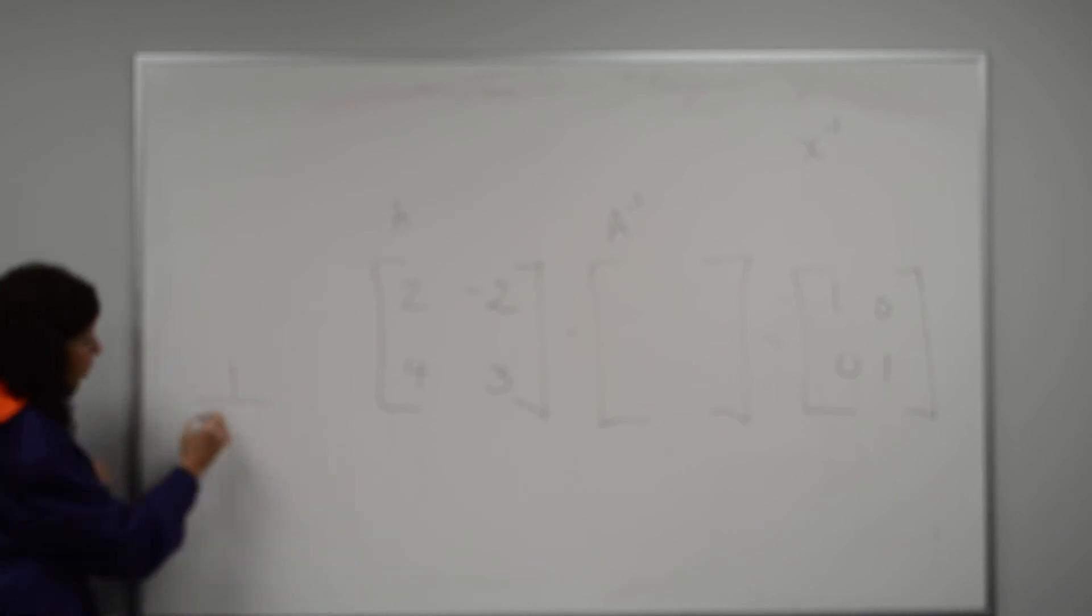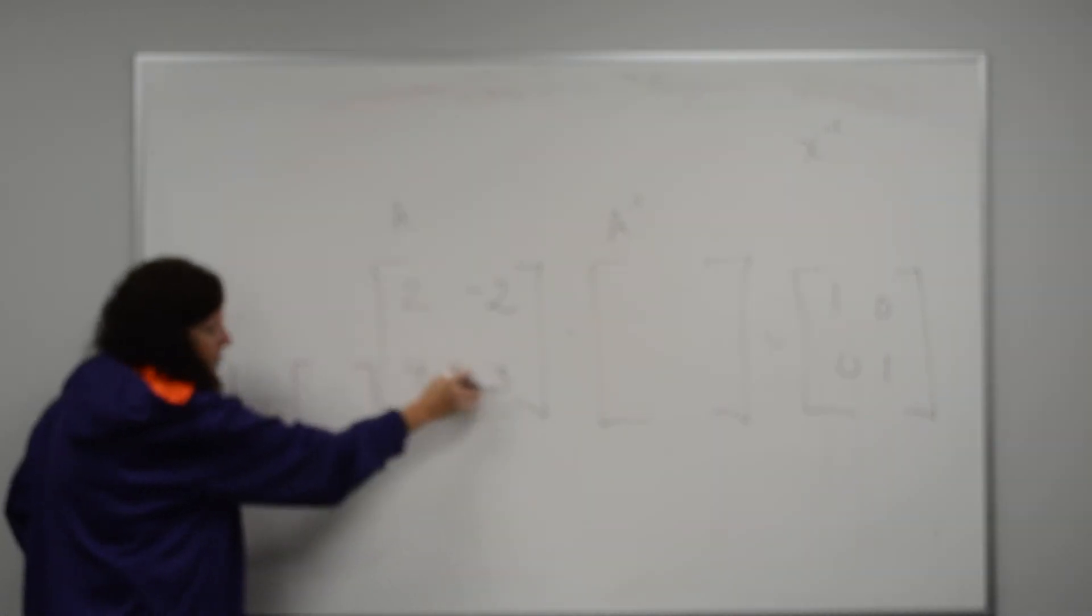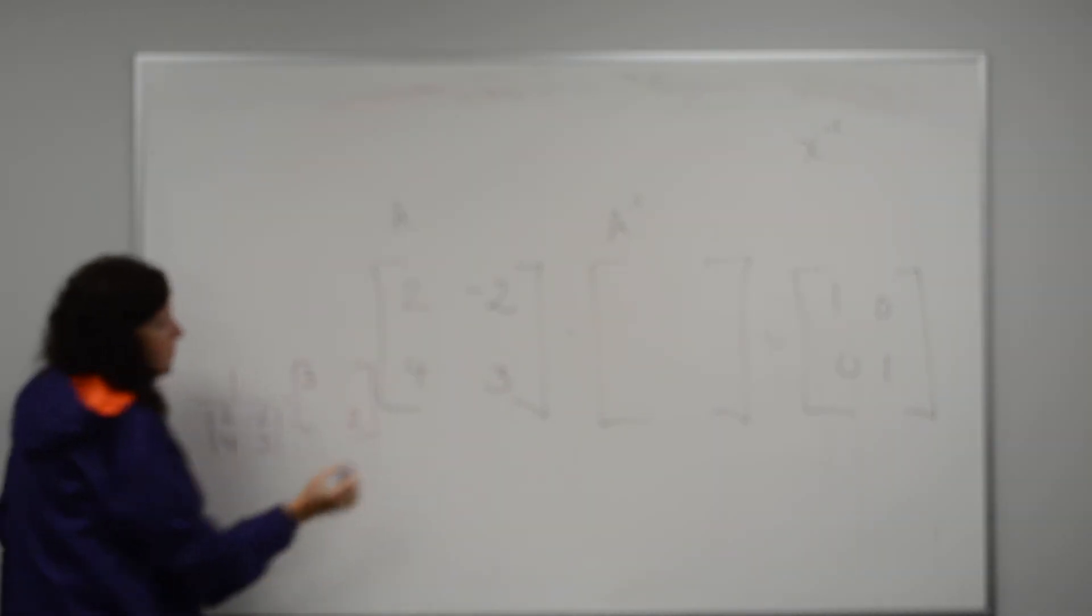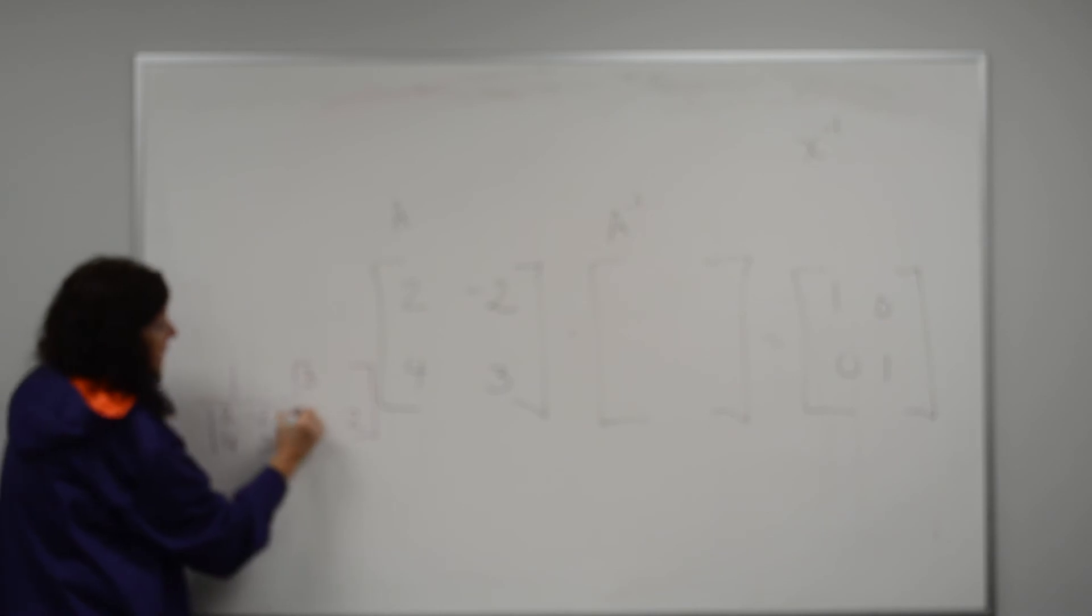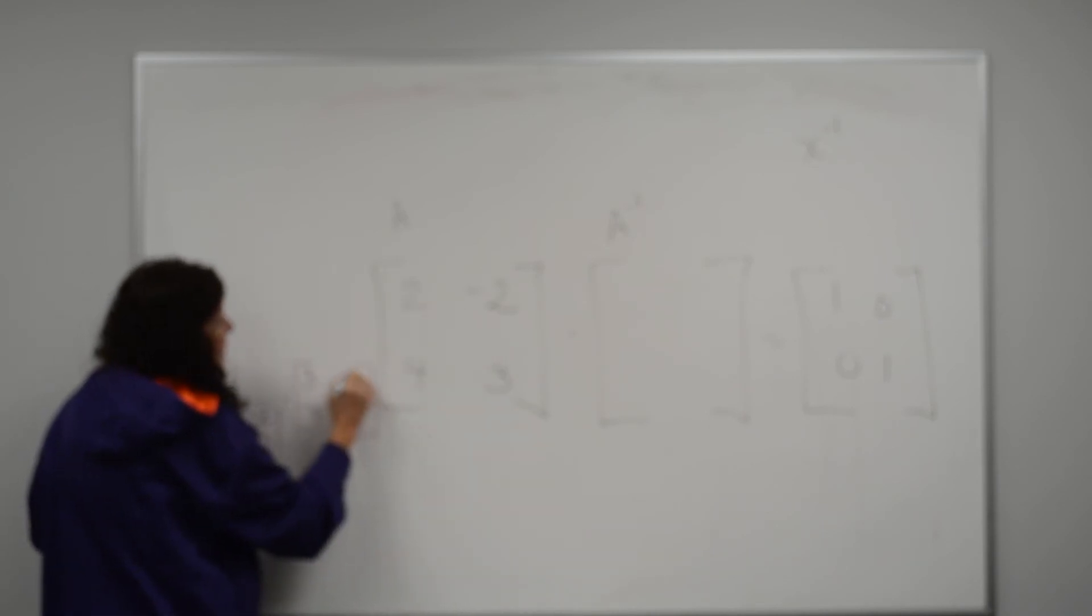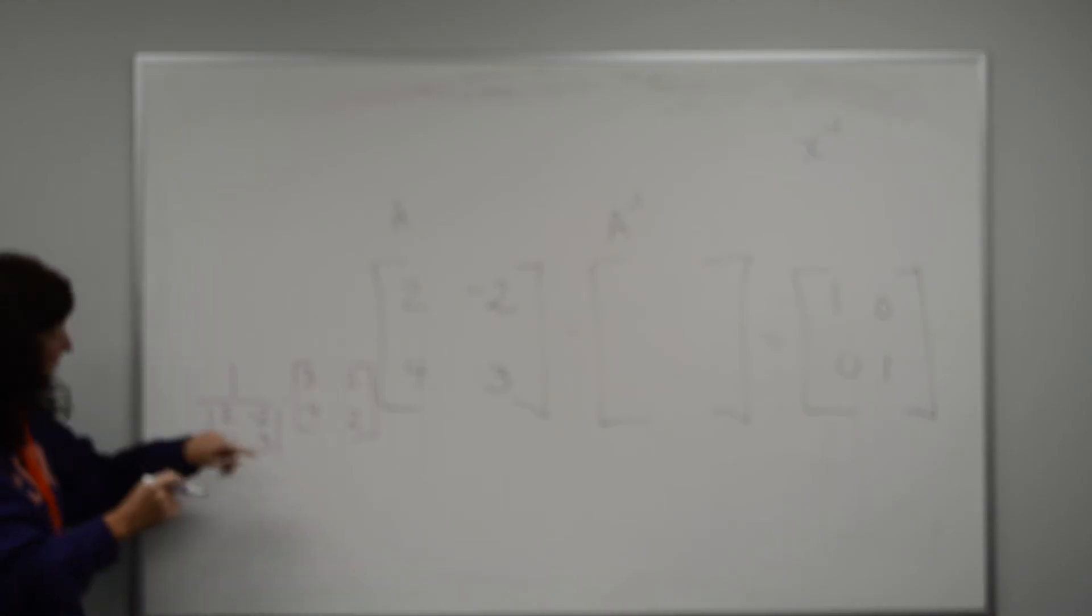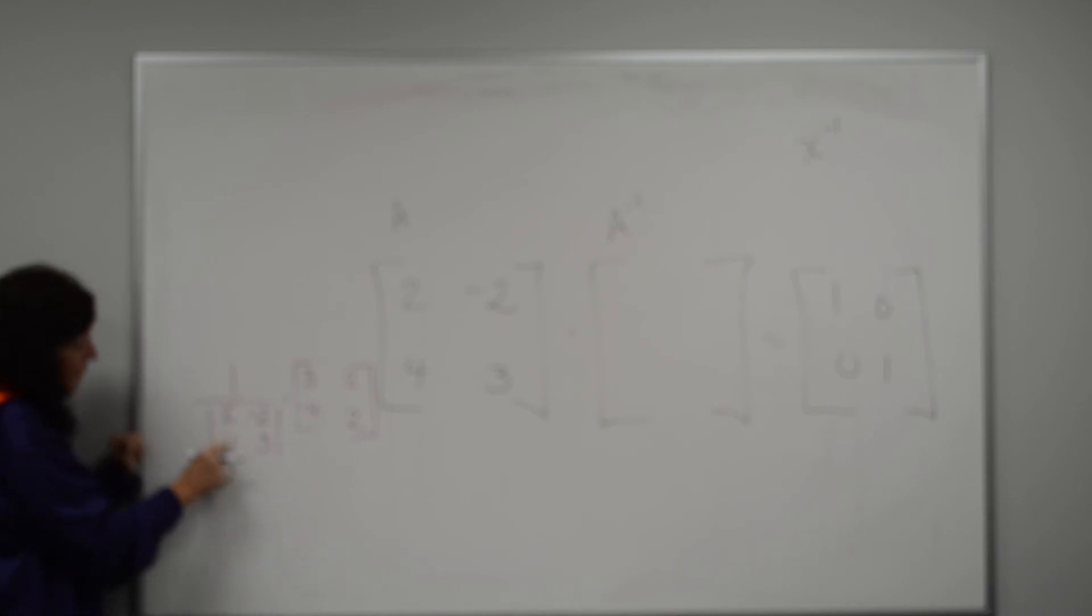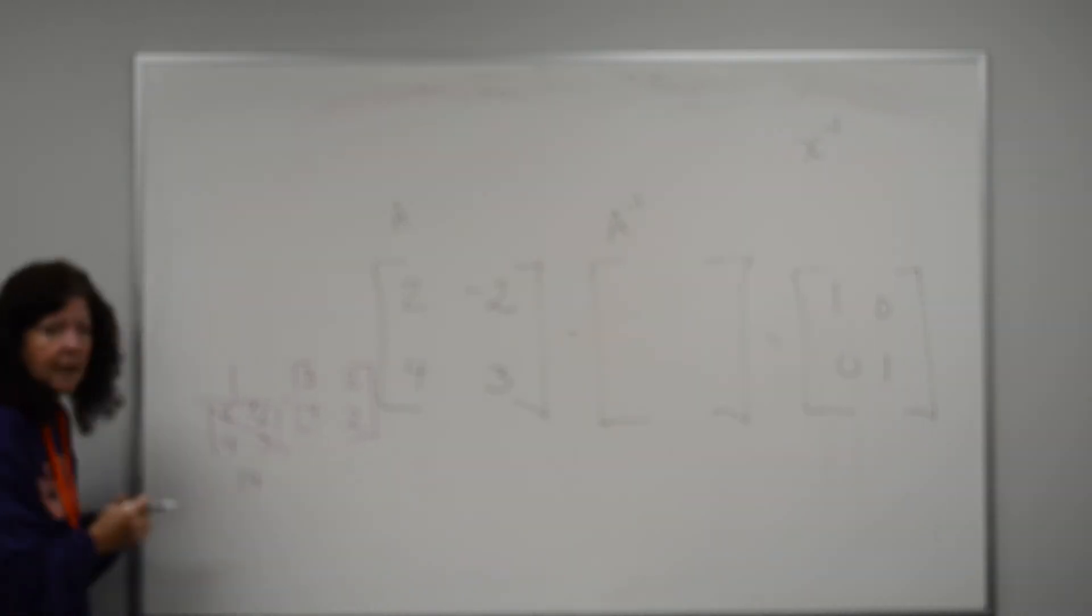Here's my matrix. I want to find the inverse of this matrix. To find the inverse of a 2 by 2, I go 1 over the determinant of this matrix times, watch, I'm going to switch these two. So 3 and 2, they just switch places. Then I'm going to take the opposite of these two. That positive 4 becomes a negative 4. That negative 2 becomes a positive 2. Then when I find the determinant, 2 times 3 is 6, 4 times negative 2 is negative 8. So I have a 6 minus a negative 8. That's 1 over 14.